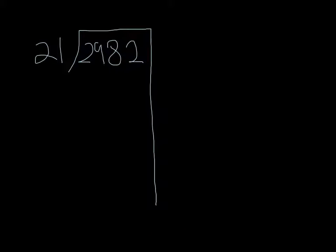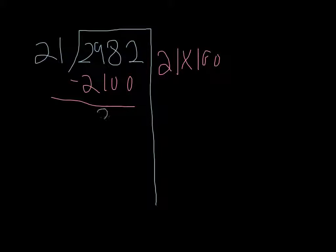We have to get this. We use the big 7 and it's 21 multiplied by 100 and you subtract it. It goes to 882 and you multiply 21 multiplied by 40.